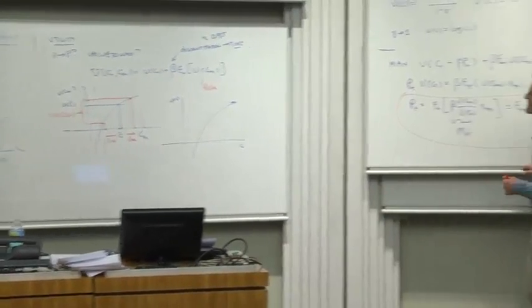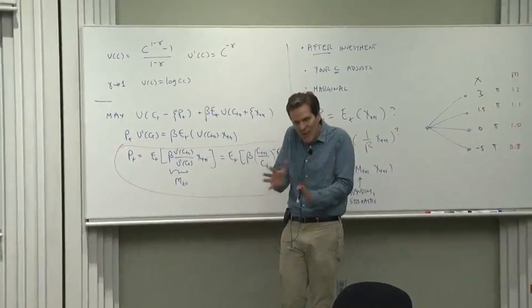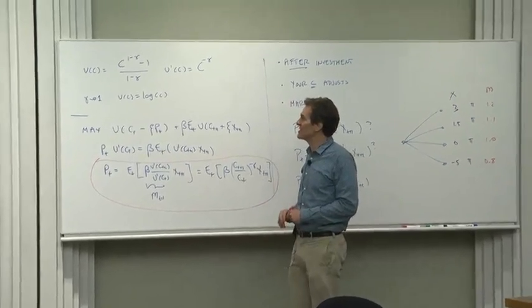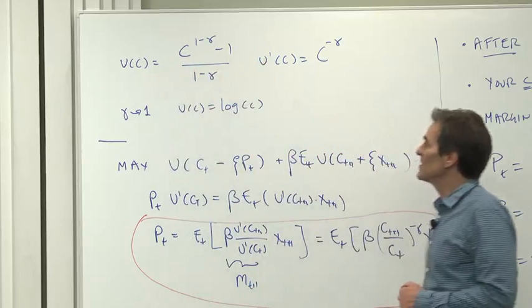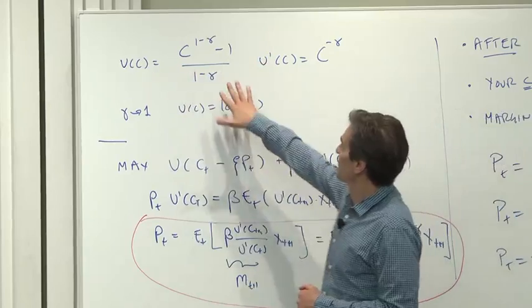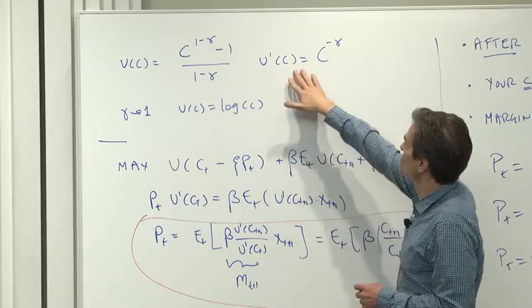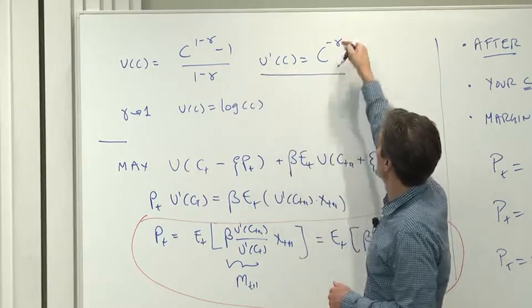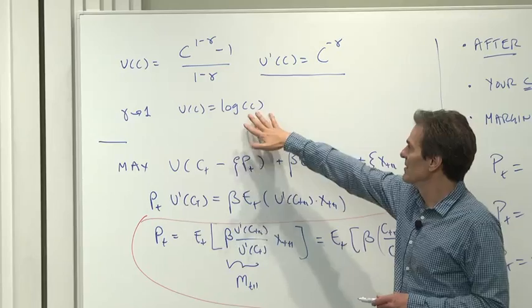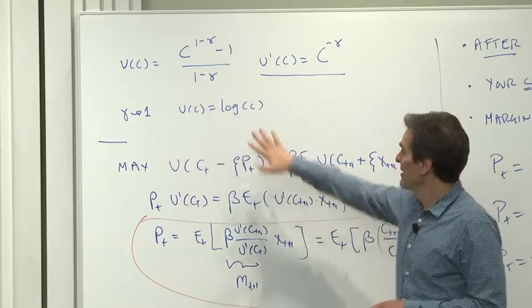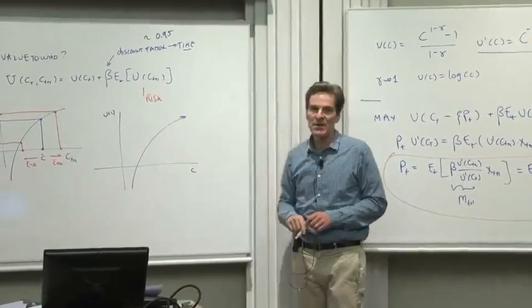A typical functional form that we'll use, because we have to work out problems, we have to be able to create little artificial economies and see how they price assets. A typical functional form we'll use, because it's very convenient, is this power function, c to the 1 minus gamma. You can see that the 1 minus gamma over here is there so that marginal utility is simple. Marginal utility, which is what's going to show up in all our formulas, is just a power function. Or as gamma goes to 1, the simplest and clearest of all, the log utility function. That's a function that looks just like this. As consumption goes up, the log utility function goes up, but at a declining rate.